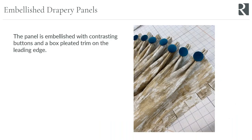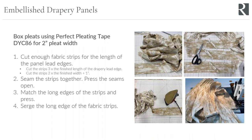This panel is just a basic panel, but what makes it unique is the embellishment, which is done with a box pleat. The box pleats are made using the Perfect Pleater Tape, number DYC86. I chose a two-inch pleat width and a depth of one and a half inches.